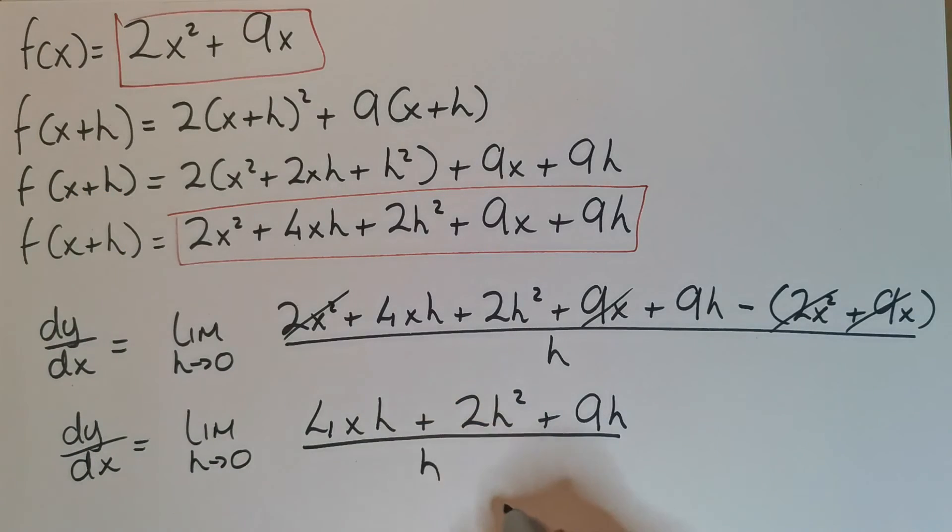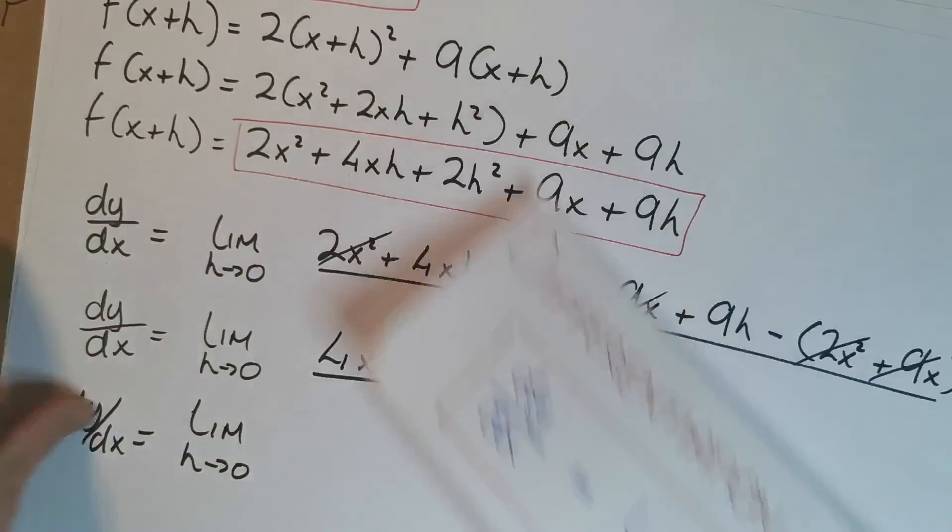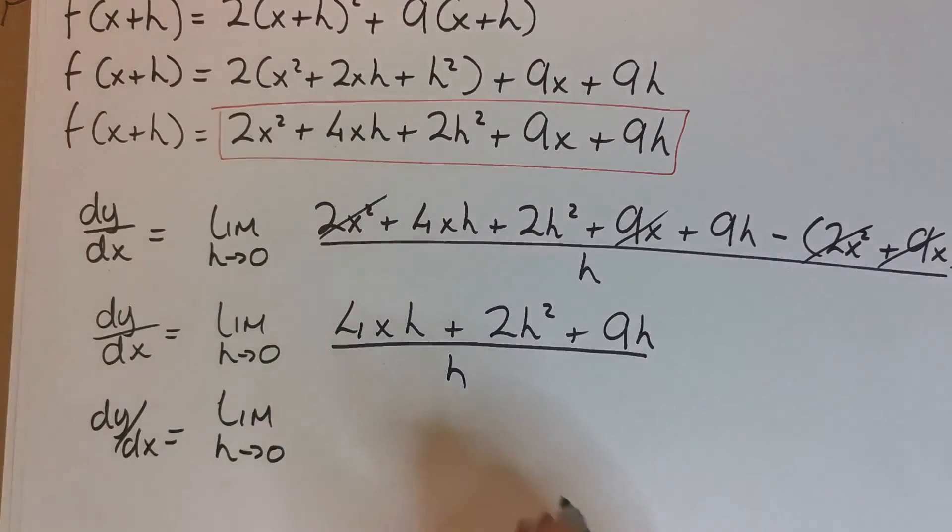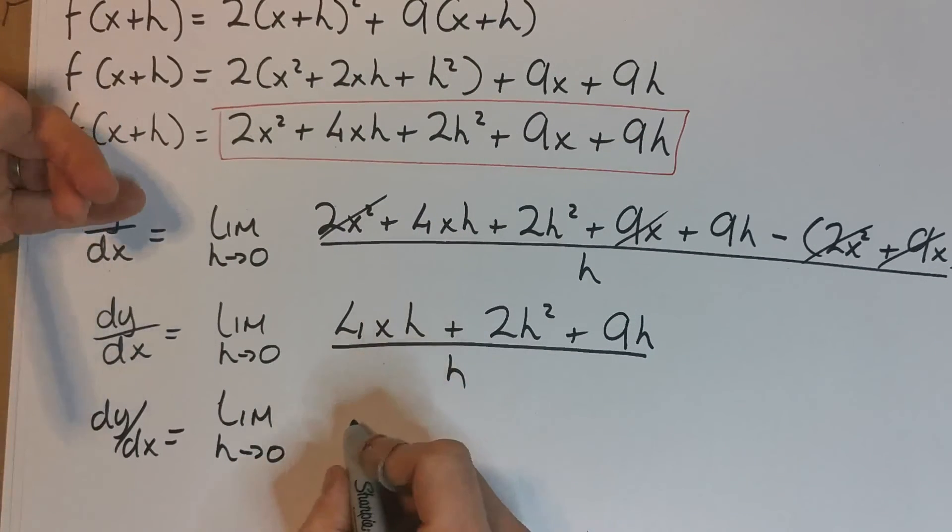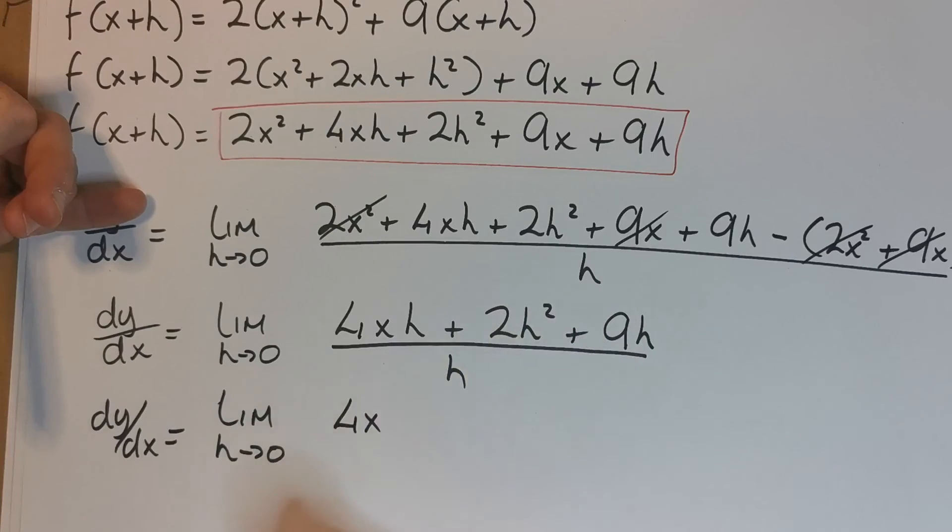Now if we actually divide h into each term here, I'm left with the limit as h goes to 0 of—well, I can't forget this is what dy/dx is, what my derivative is. So the limit as h goes to 0, h into 4xh leaves me with 4x.